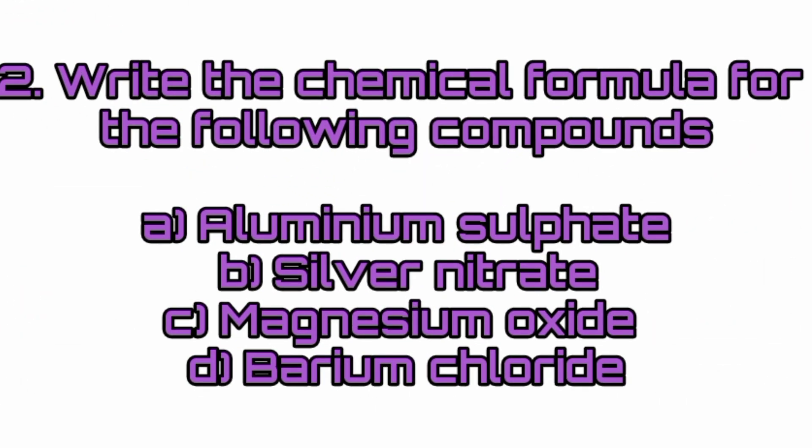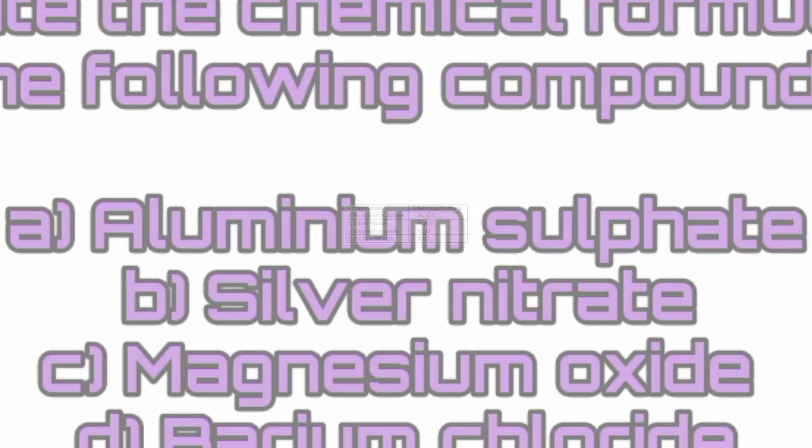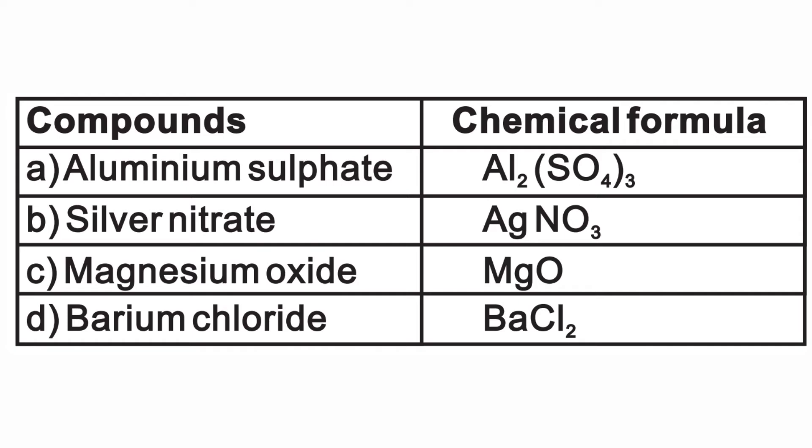Write the chemical formula for the following compounds: Aluminium sulphate — Al₂(SO₄)₃; Silver nitrate — AgNO₃; Magnesium oxide — MgO; Barium chloride — BaCl₂.